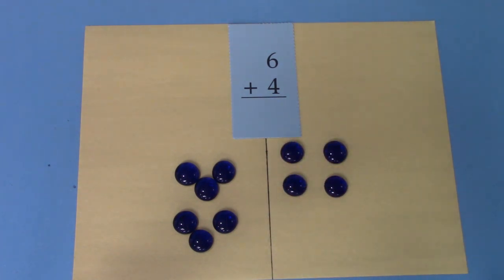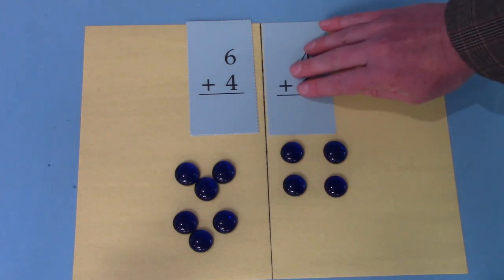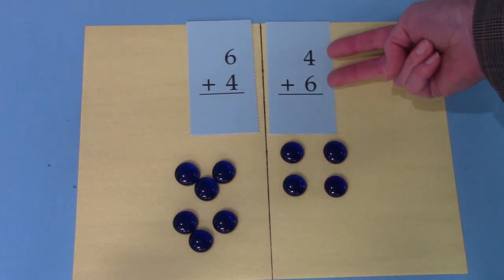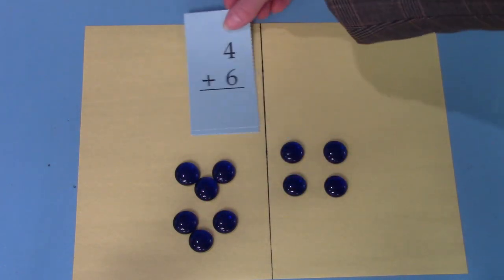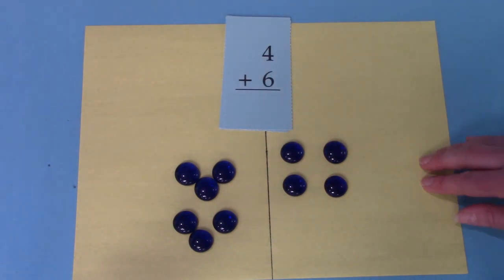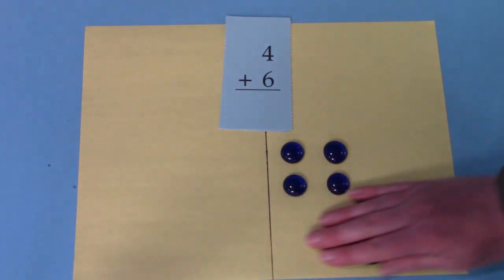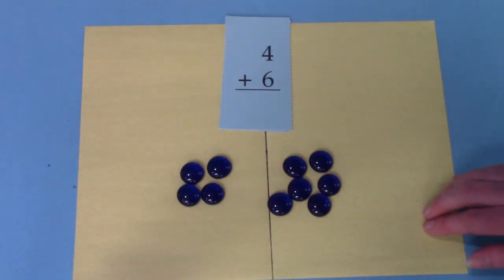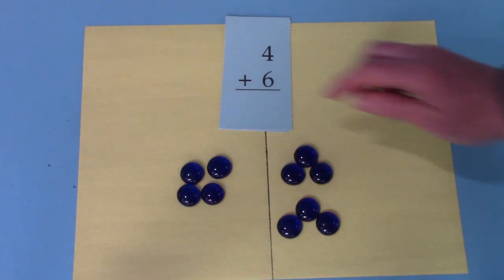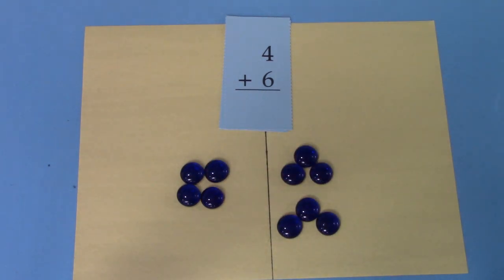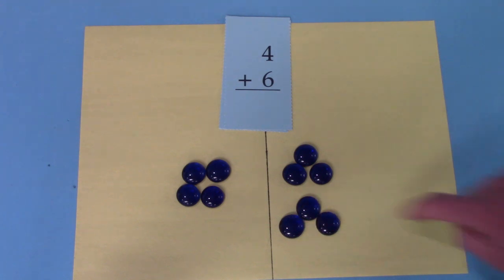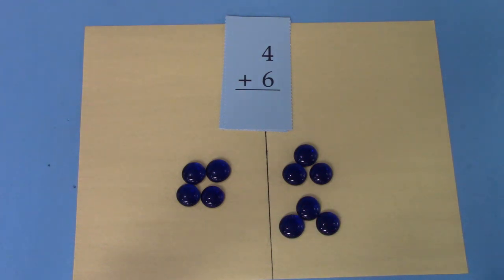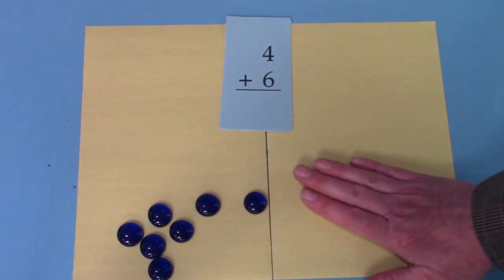We have a switcheroo fact that matches that. Six plus four and four plus six are our switcheroos. Our gems here show six plus four. But what if we change them and make it show four plus six. So move these six on this side and four over there. Is that going to change our answer? Is that going to change the total or the sum? No. One, two, three, four, five, six, seven, eight, nine, ten. We're still going to have ten even if we just move them from side to side.